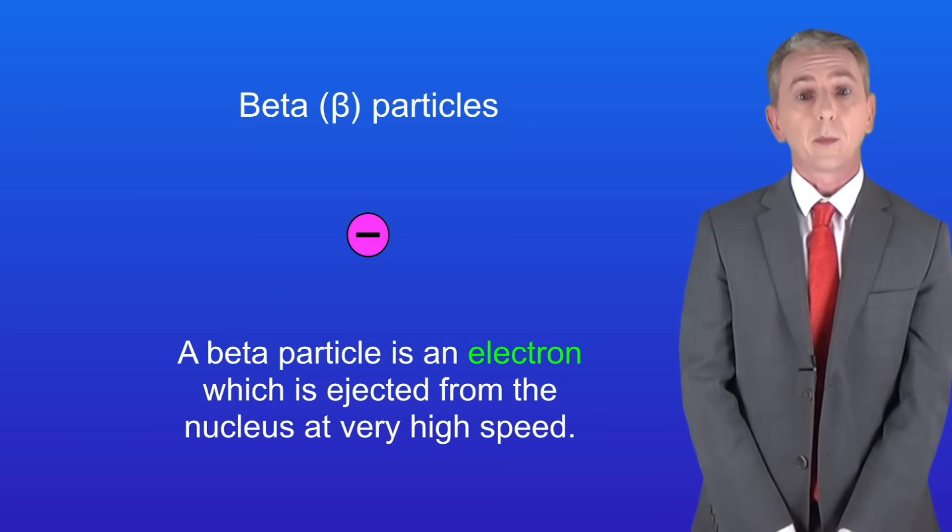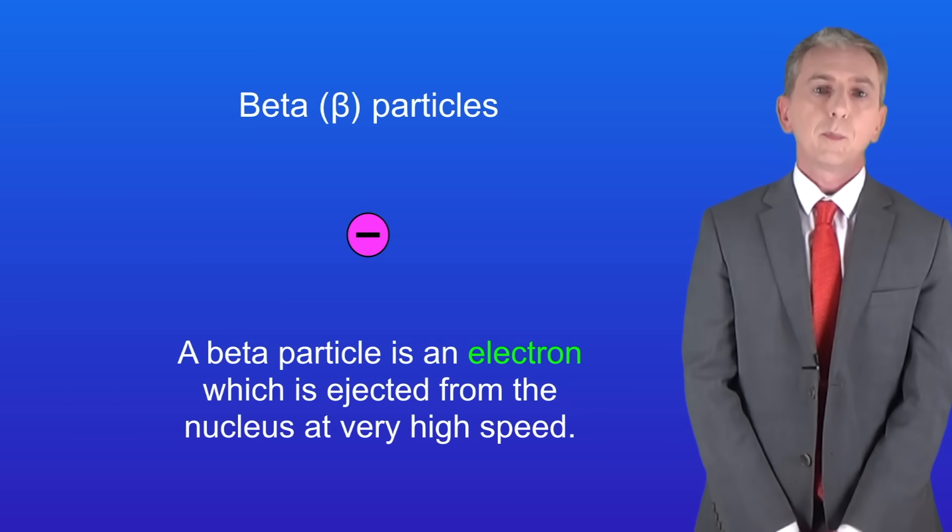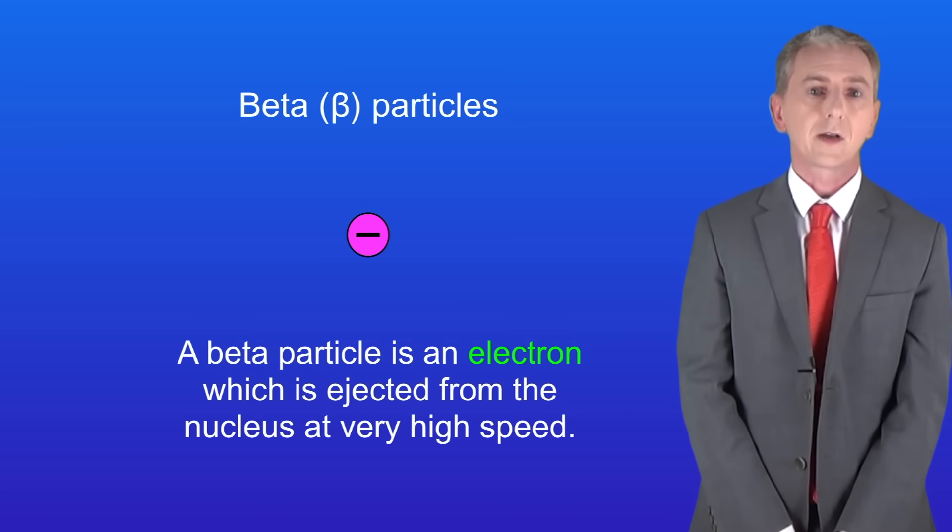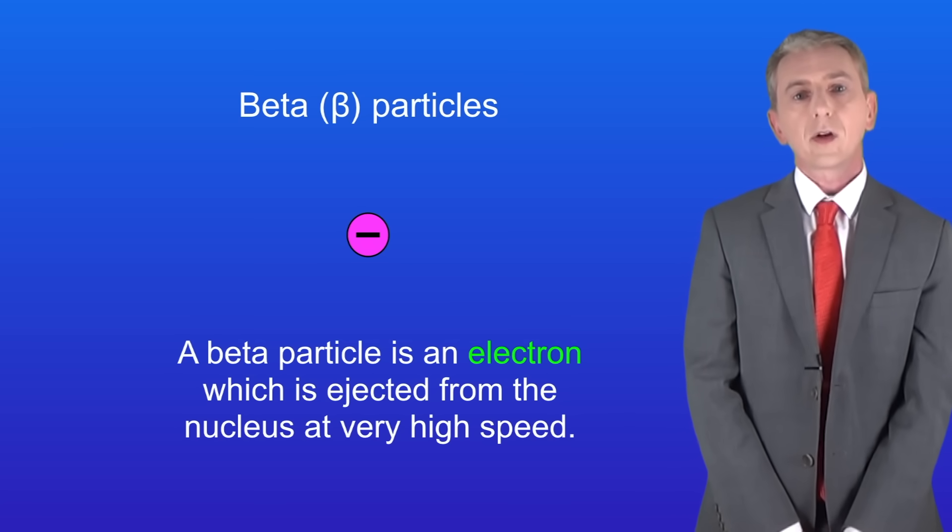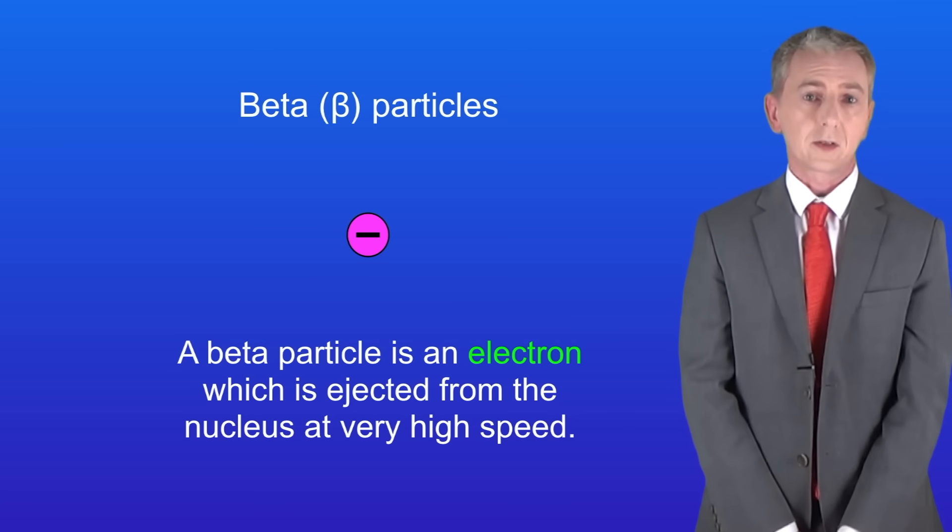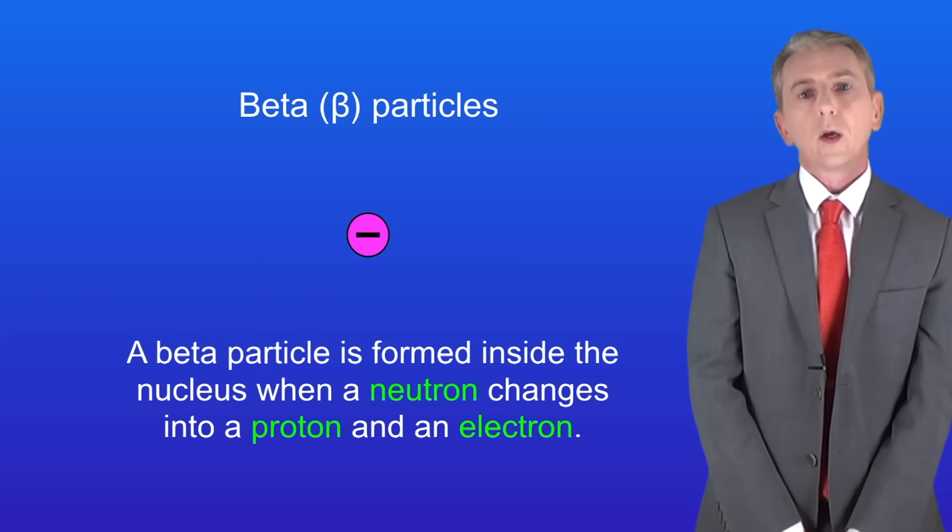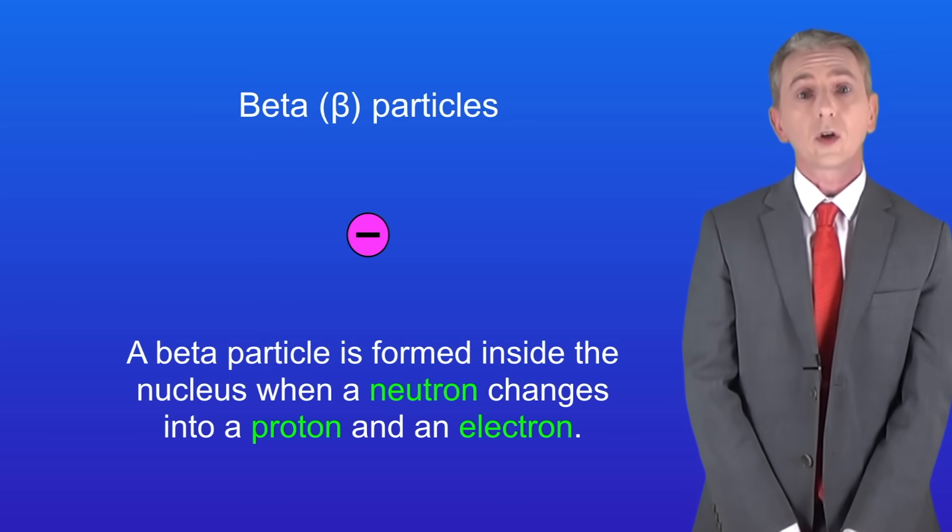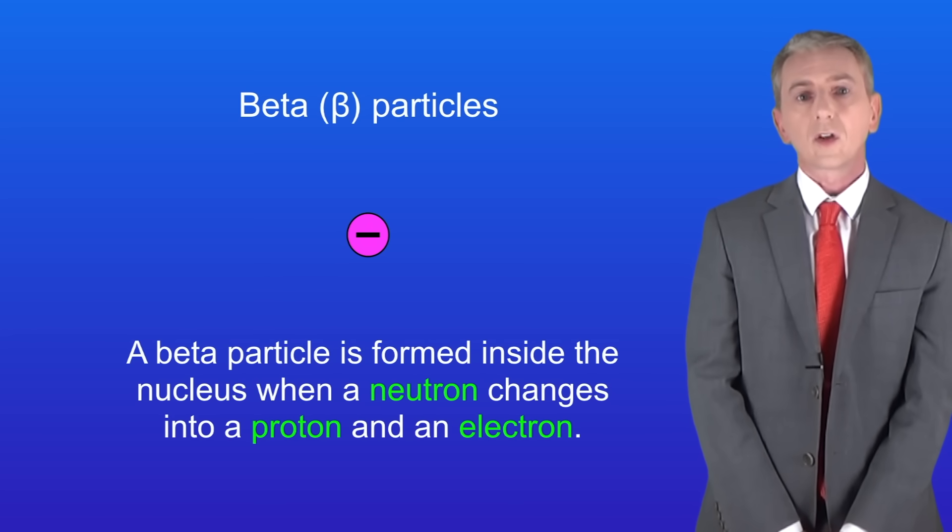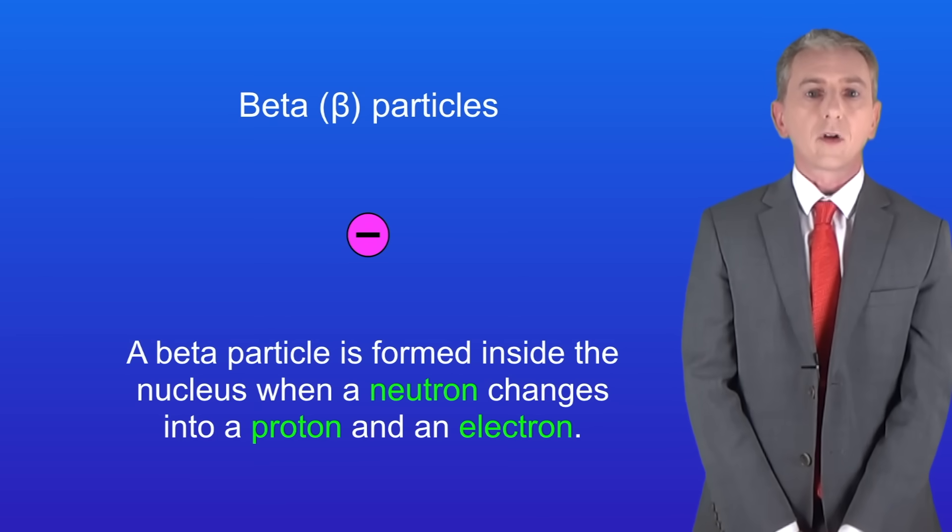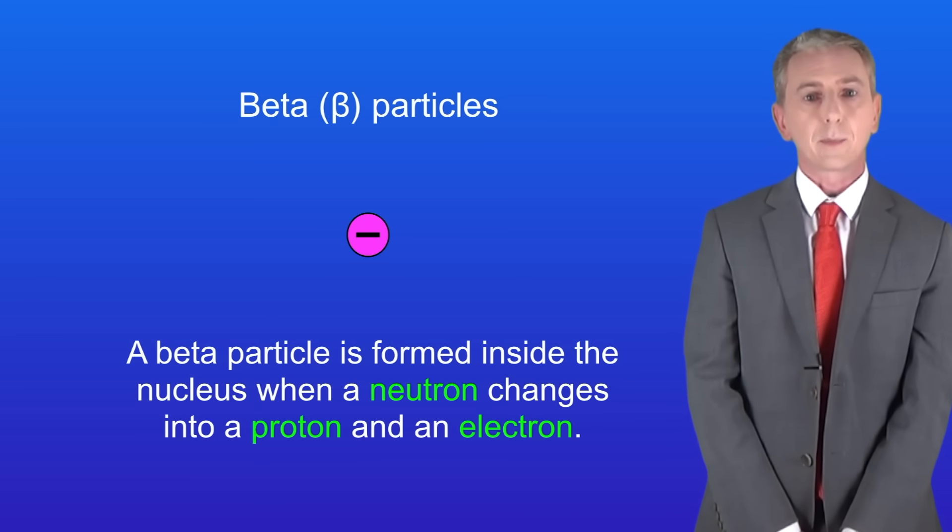The second type of radiation is called a beta particle. A beta particle is simply an electron which is ejected from the nucleus at very high speed. Now we've already seen that the nucleus of atoms does not contain electrons so where does the beta particle come from? Well the answer is that the beta particle is formed inside the nucleus when a neutron changes into a proton and an electron. The electron is ejected from the nucleus and we now call it a beta particle.